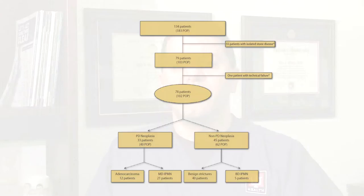The presumptive diagnoses based on the pancreatoscopy visual impression were then compared to the final diagnoses. We had 2 false positives and 3 false negatives on visual impression. This allowed us to calculate the sensitivity, specificity, positive predictive value, negative predictive value, and accuracy of pancreatoscopy visual impression alone, PDB and/or PAB alone, and combined POP visual impression with biopsies.